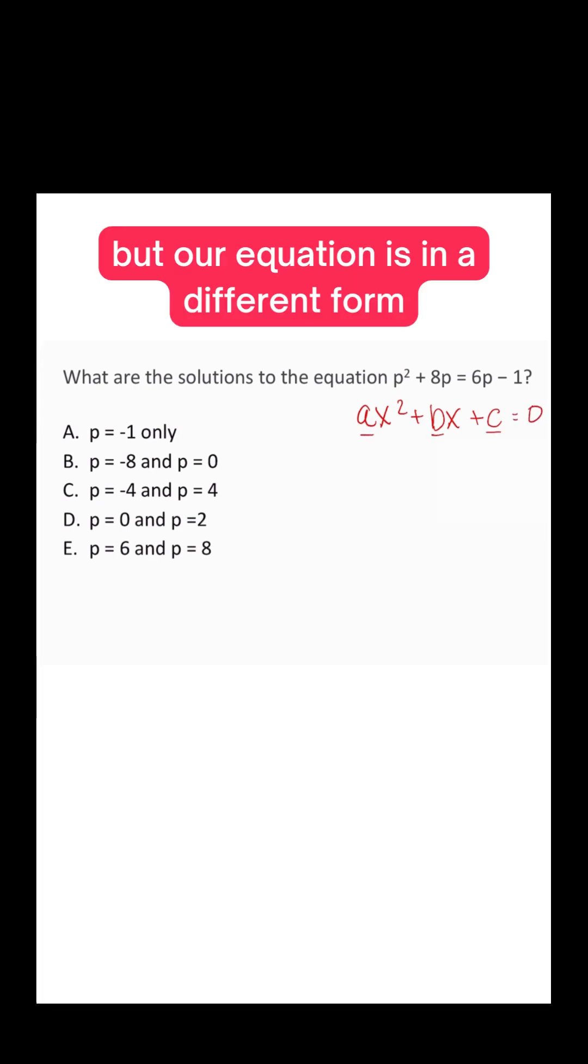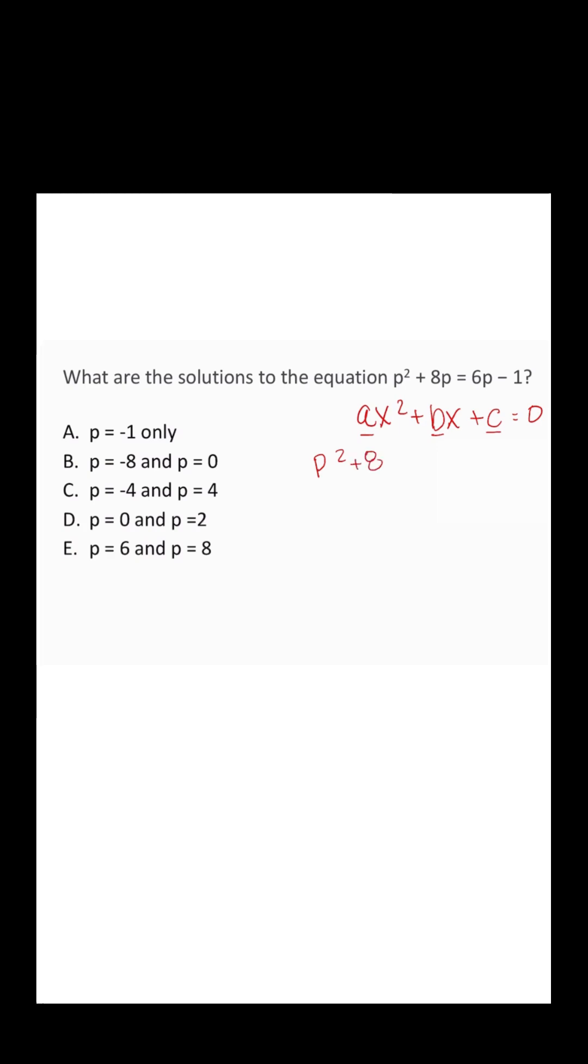Right now, our equation is in a different form, p squared plus 8p equals 6p minus 1.